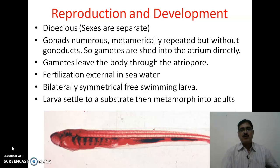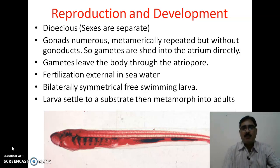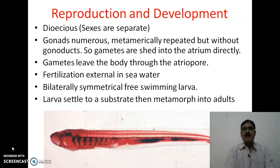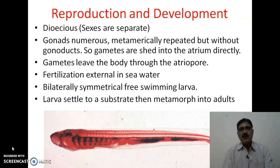As far as reproduction is concerned, the sexes are separate, meaning they are dioecious animals. The number of gonads is numerous and they are metamarically repeated, but without gonoducts. Since gonoducts are absent, the gametes are released or shed directly into the atrial cavity, from which they leave the body through the atriopore. Fertilization always takes place in seawater, meaning it is always external and cross-fertilization.